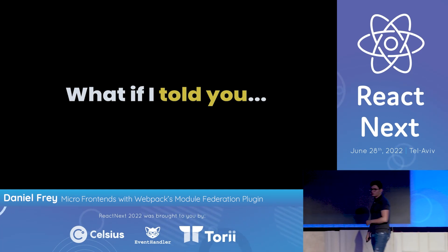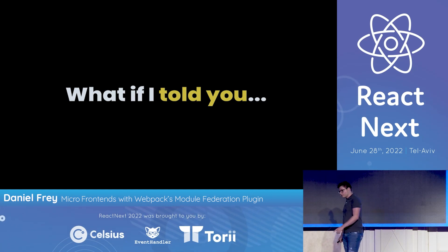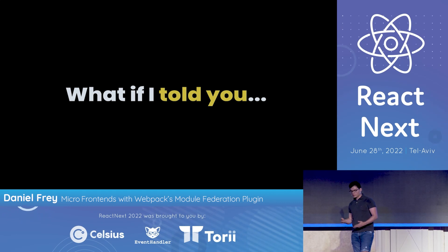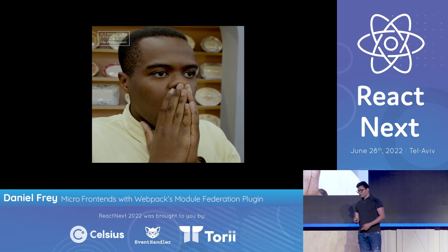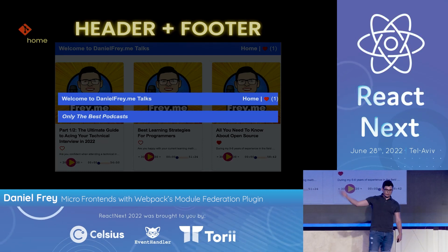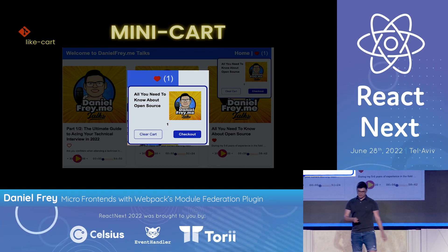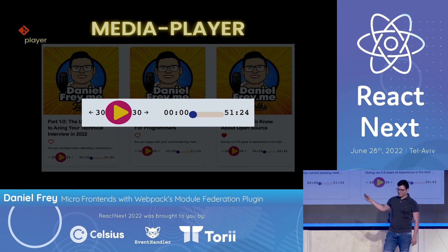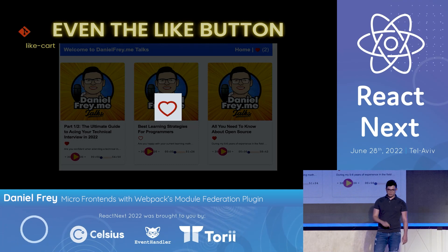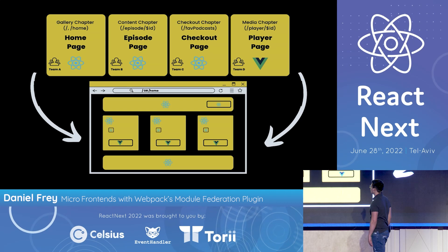What if I told you that what we just saw were four separate apps, and those apps could be deployed by different teams — all running together? If I change the header or just about anything, it would reflect immediately. No need to redeploy. It all happens at runtime. So let's break things down: the header and footer are split into their own package, the mini card goes to the light card package, we have a media player in the player package, the episode content, and even the like button goes to the light card package.